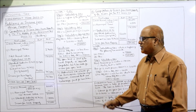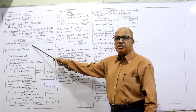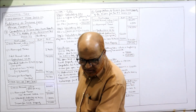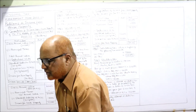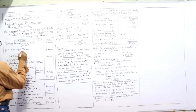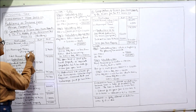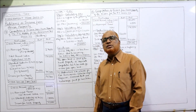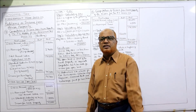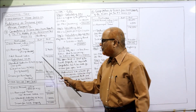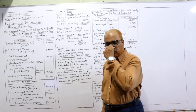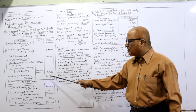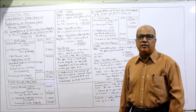GAV is 1,98,000. Minus municipal taxes: 15% of MRV (1,80,000) = 27,000. Deducting gives NAV of 1,71,000. From this, standard deduction under Section 24A is 30% of NAV = 51,300. Interest on loan taken to construct the house: 12% of 2 lakh = 24,000. Total deductions: 75,300. Income from house property (building part): 1,71,000 − 75,300 = 95,700.